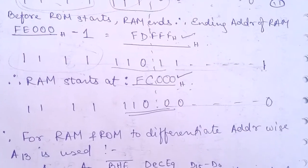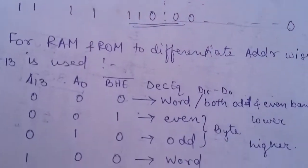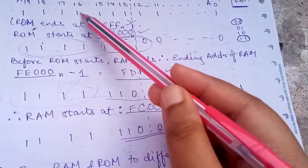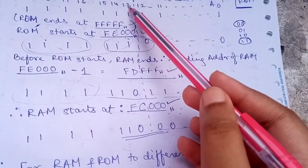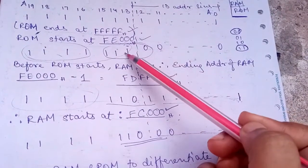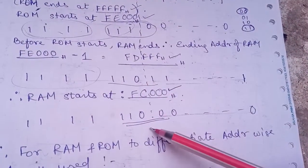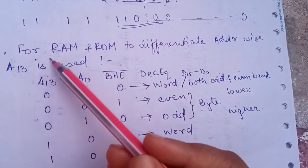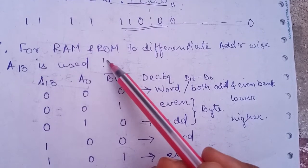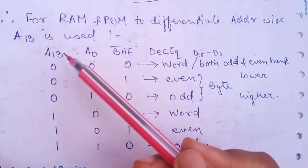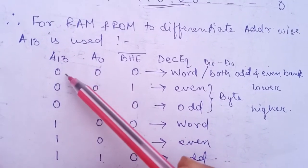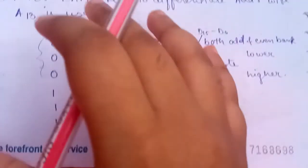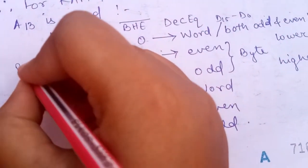Looking at the addresses, only A13 and A14 differ between RAM and ROM — for ROM they are 1,1 and for RAM they are 0,0. So to differentiate RAM and ROM based on address, we use A13: when A13 is zero it denotes RAM, and when A13 is one it denotes ROM.